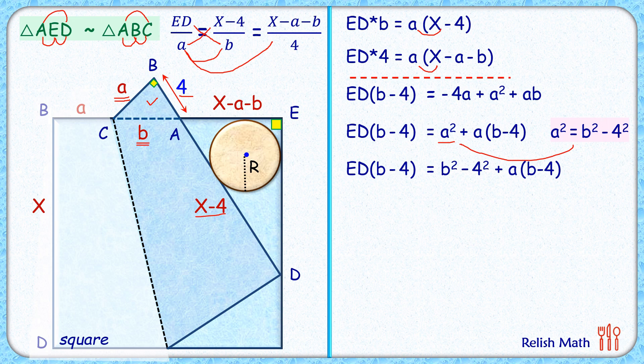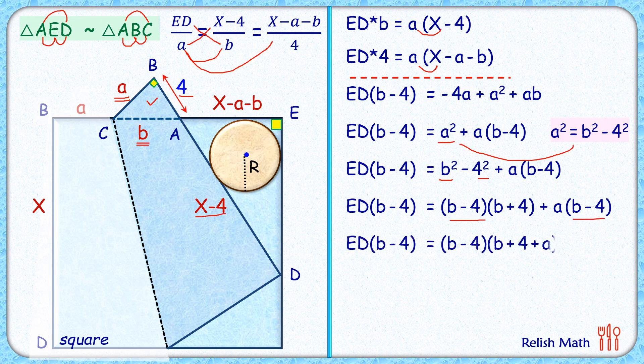Now here we'll apply formula of x² - y². Doing factorization, now here in these two terms we'll take (b - 4) as common. So we have (b - 4) here and (b - 4) here. We'll take it common and our equation is left this. Now both sides, LHS and RHS, (b - 4) will get cancelled down. So what we are getting here is ED length. ED is nothing but b + 4 + a.